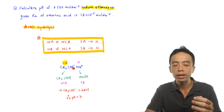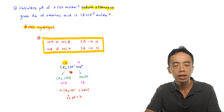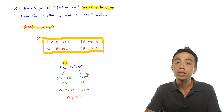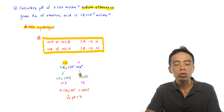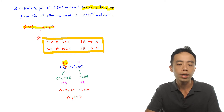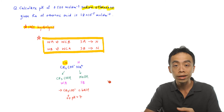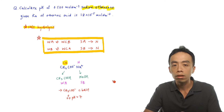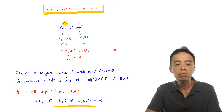CH₃COO⁻ comes from a weak acid, so it is a conjugate base. Na⁺ comes from sodium hydroxide, which is a strong base, so Na⁺ is a neutral counter ion. Since the cation is neutral and the anion is a conjugate base, the conjugate base will produce OH⁻ in solution. Therefore the solution is expected to be alkaline, and the pH is expected to be above 7.